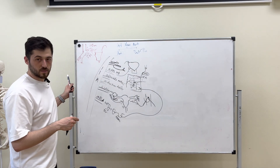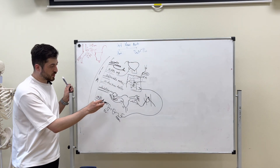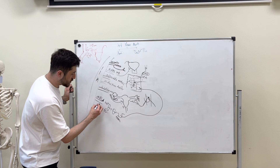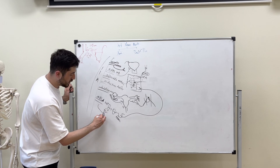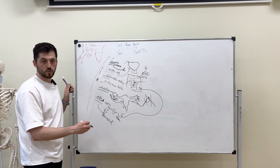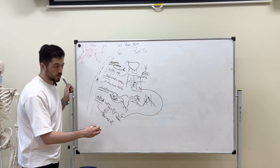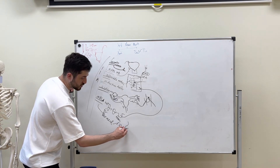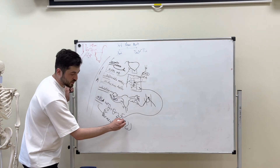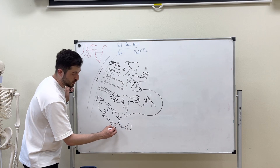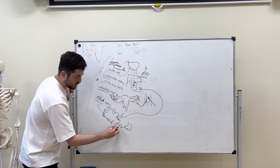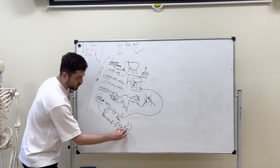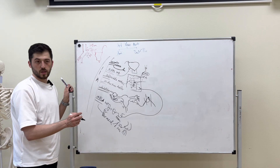The next branch of pudenda interna is the perineal artery, which gives off rami scrotales posteriores in males — going to the scrotum — or rami labiales posteriores in females, going to the labia majora and minora. There is also a branch to the urethra.